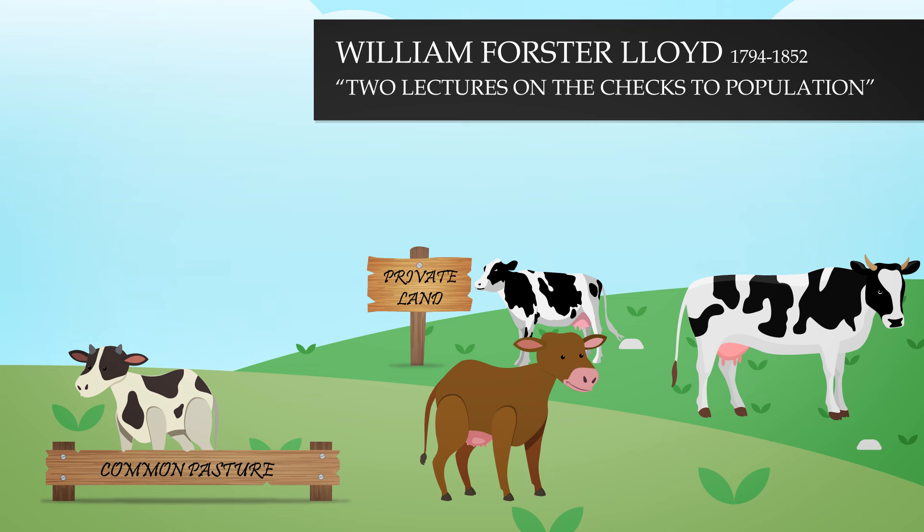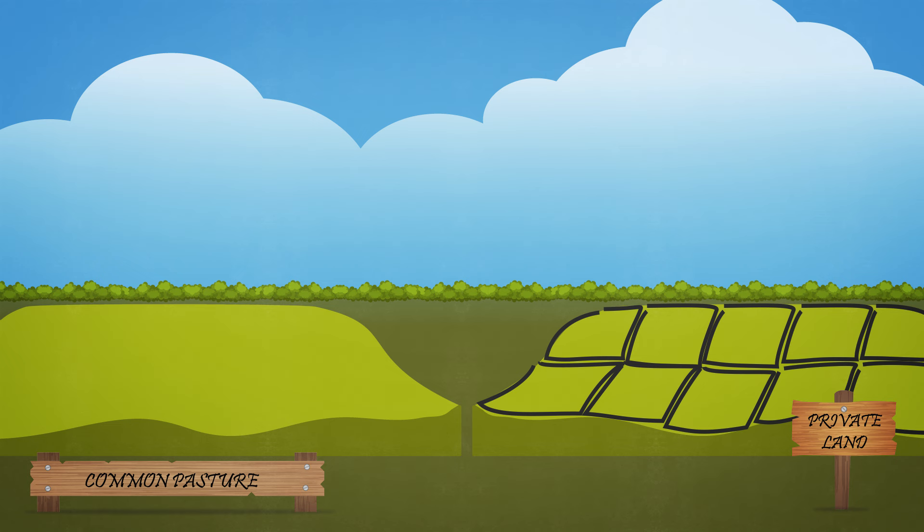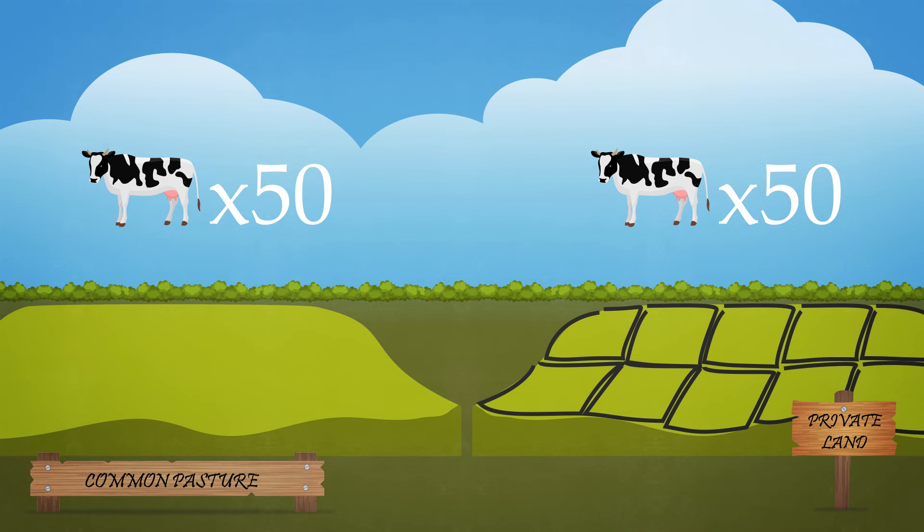Imagine two pastured lands of the same size. One is a common pasture that is used by ten peasants, and the other is divided into ten identical lots, each used as a private pasture by one of the ten different owners. Both pasture lands can feed up to 50 cattle in a year before being unable to regenerate crops.